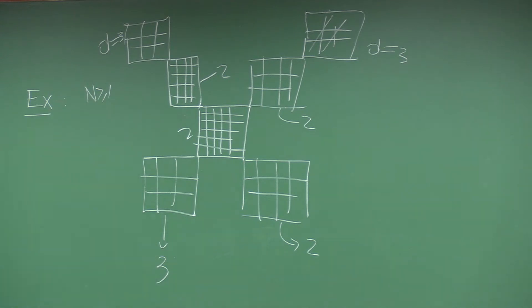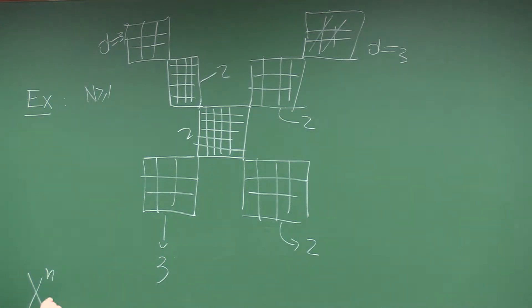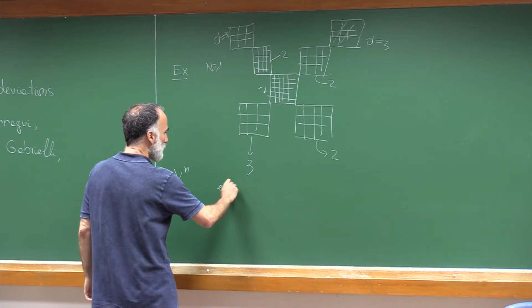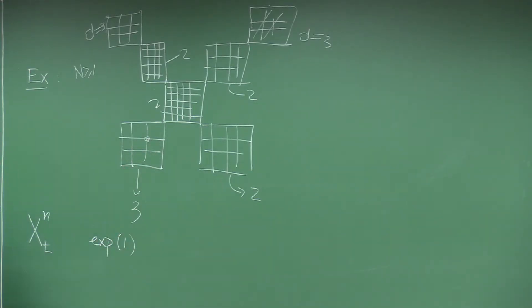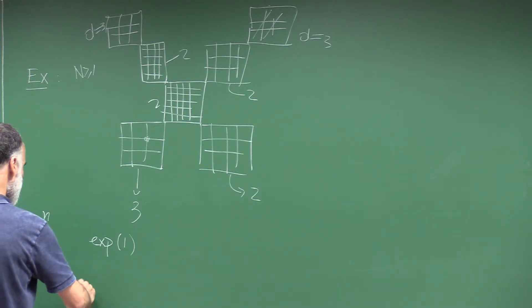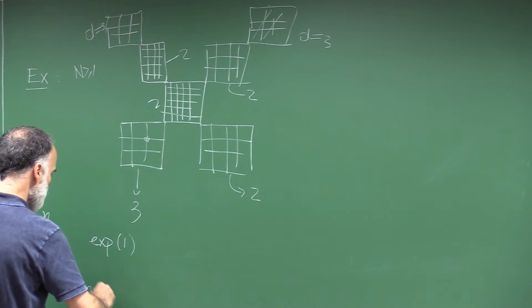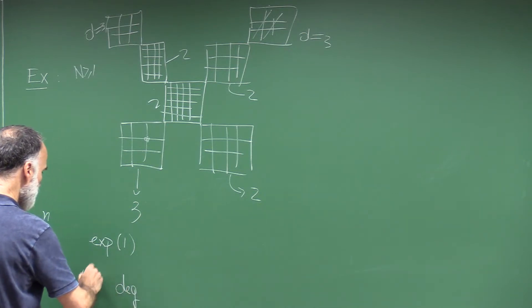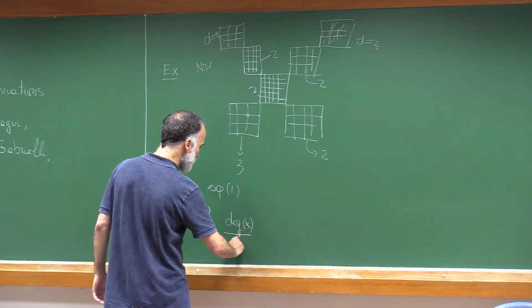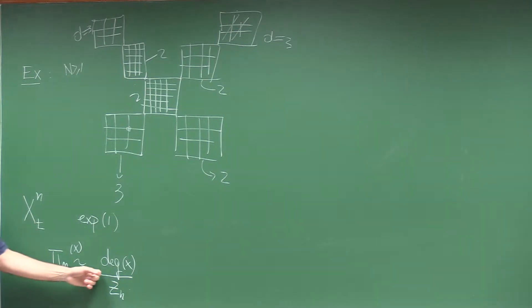I consider a random walk moving in this space, which I represent by X(t). This random walk waits an exponential time of mean 1 at one point, and at the end of this waiting time it chooses, with uniform probability, one of its neighbors, and it jumps there. This process X(t) is irreducible; it has a unique stationary state π_N, which is proportional to the degree — π_N of a point X is proportional to the degree of X divided by a renormalizing constant, where the degree of X means the number of neighbors.